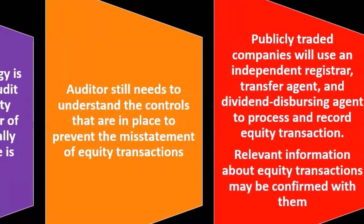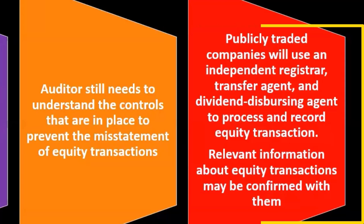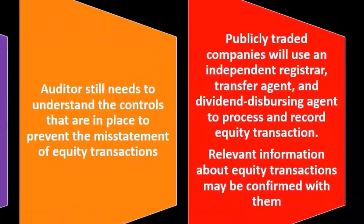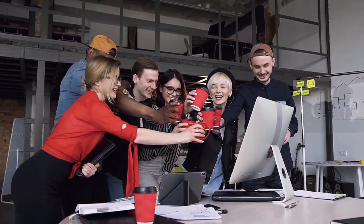Publicly traded companies will use an independent registrar, a transfer agent, and a dividend disbursement agent to process and record equity transactions. Relevant information about equity transactions may be confirmed with them. This is a type of internal control and regulation for publicly traded companies, and it gives us institutional individuals outside the organization who can help us gain an understanding of these transactions.